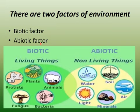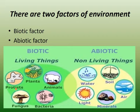The biotic factor includes all the living things. As you can see in the figure, the biotic factor includes plants, animals, bacteria, fungus, protists, and many other living things that can be around you. All these living things come under the biotic factor, which is one factor of the environment. The other factor is the abiotic factor.